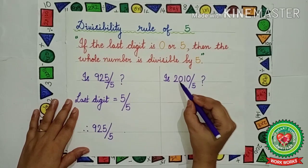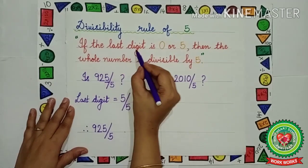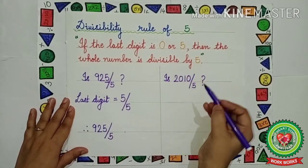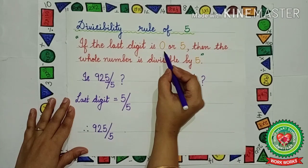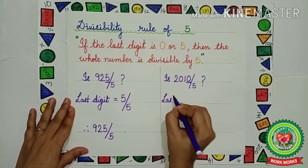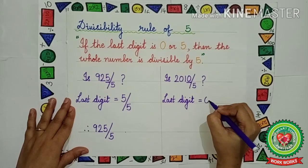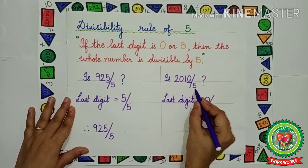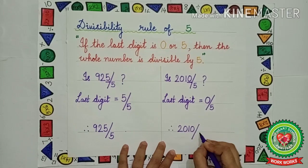Is 2010 divisible by 5? The rule of 5 says if the last digit is 0 or 5, then the whole number is divisible by 5. Which is the last digit? That is 0. That means it is divisible by 5 because the rule says if the last digit is 0 or 5, it will be divisible by 5. The last digit is 0, so according to the rule, the whole number is divisible by 5. Therefore, 2010 is divisible by 5.